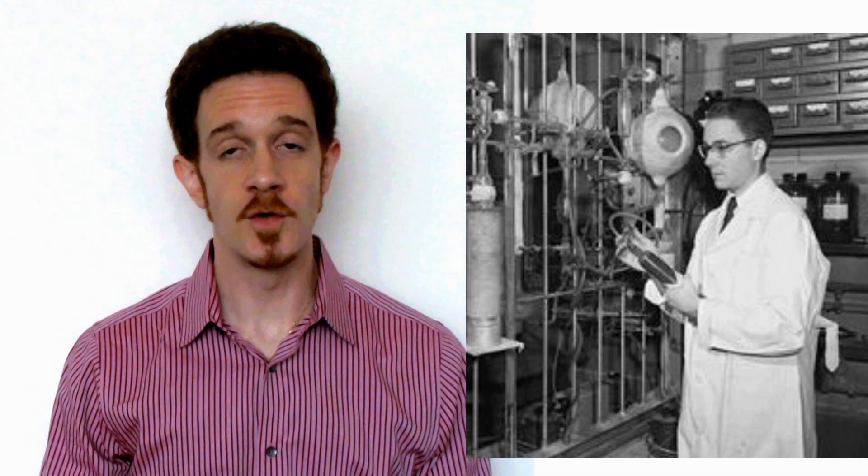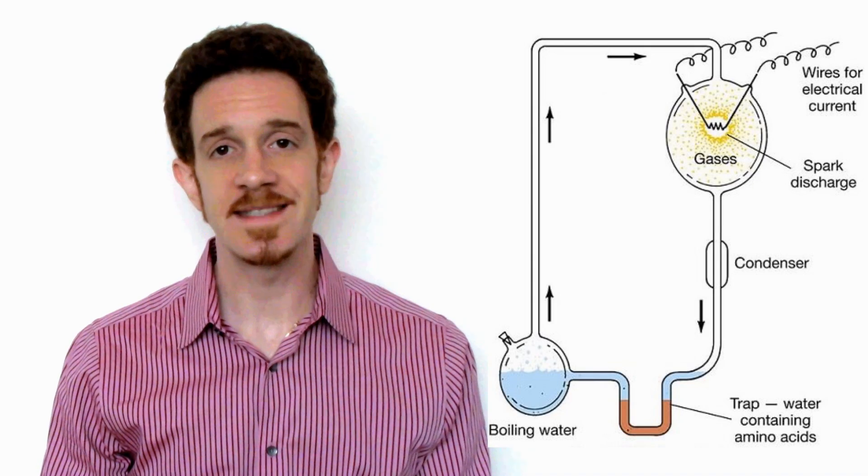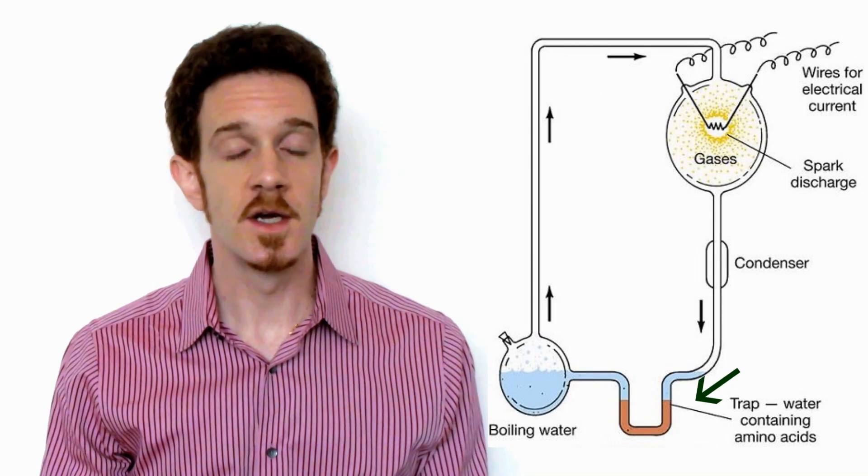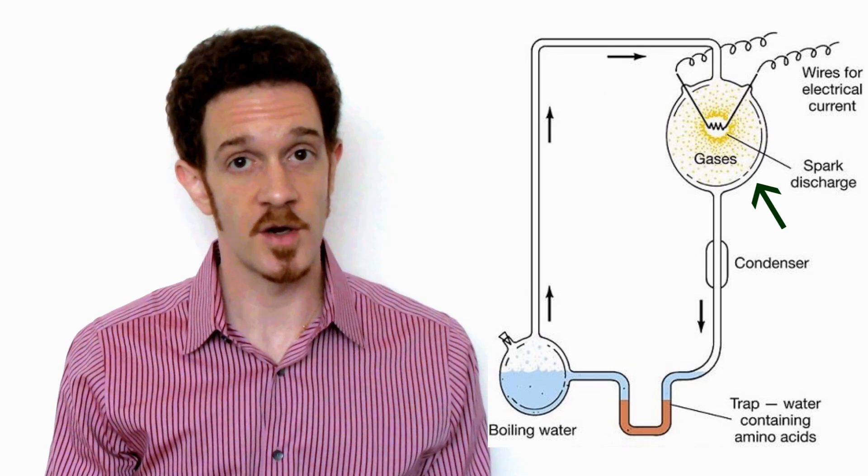But how do you get something from nothing? In 1952, the landmark Miller-Urey experiment provided support for the chemical origins of life by showing the spontaneous creation of amino acids, which are the building blocks of proteins, just by adding a spark discharge to a mix of gases thought to be found on the early Earth.